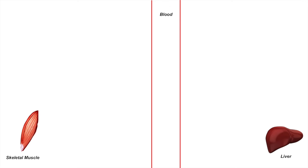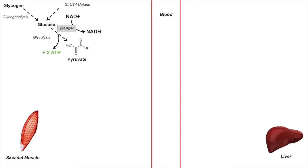During intensive exercise in the skeletal muscle, glucose is one of the most important energy sources. Glucose can come from the breakdown of glycogen through glycogenolysis or through uptake via GLUT4 transporters. The muscle breaks down glucose through glycolysis, leading to the production of pyruvate — a three-carbon molecule. Since glucose is six carbons, glycolysis actually produces two pyruvate molecules.